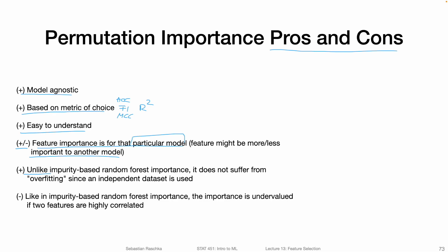Unlike impurity-based random forest feature importance, permutation importance does not suffer from overfitting since an independent dataset is used. When we compute random forest feature importance, the model might be overfitting, so how much it relies on a feature may not be a useful measure. With permutation importance, we use an independent holdout or test set, which is an advantage — though it can be a disadvantage if the dataset is small and we can't afford setting aside data for validation.